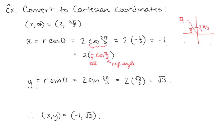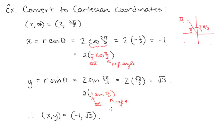Now let's find the y value. y = r sin(θ), so we take our r of 2 and sin(2π/3). The same idea applies, except sine is positive in quadrant 2. So this is 2 × sin(π/3) — the reference angle — and positive comes from quadrant 2 with sine. That's 2 × (√3/2), or √3. So the xy coordinates for this point are (−1, √3).